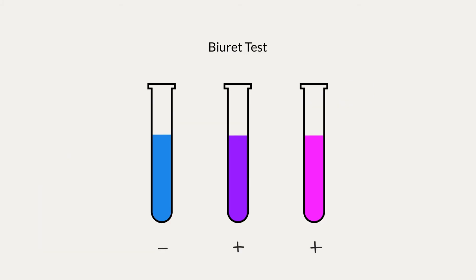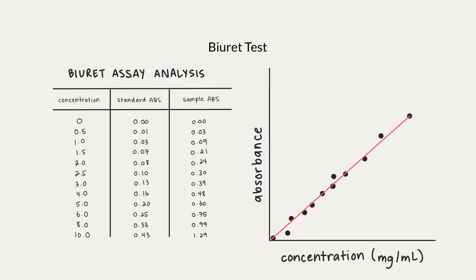If there's no color change and the solution remains blue, then this is a negative result and means there's no protein present. But any substance containing peptide bonds will form a purple complex, giving a positive result. If the solution turns pink, this means that there are short peptide chains of amino acids present. The Biuret reagent gets darker with higher concentrations of amino acids, so the Biuret test can also be used to quantify the amount of protein. The stronger the purple color, the higher the number of peptide-copper complexes, meaning more peptides in solution.